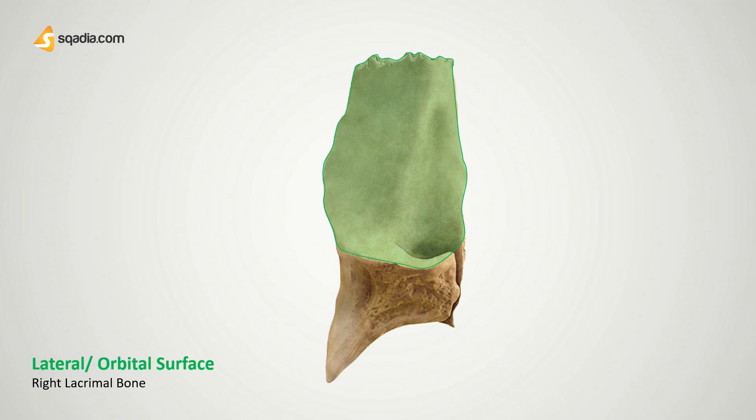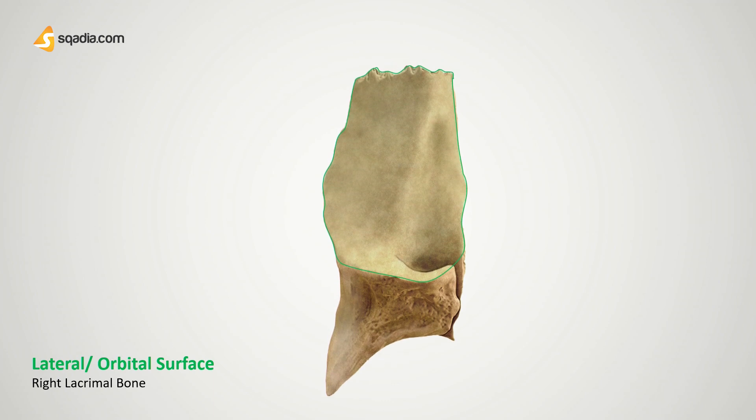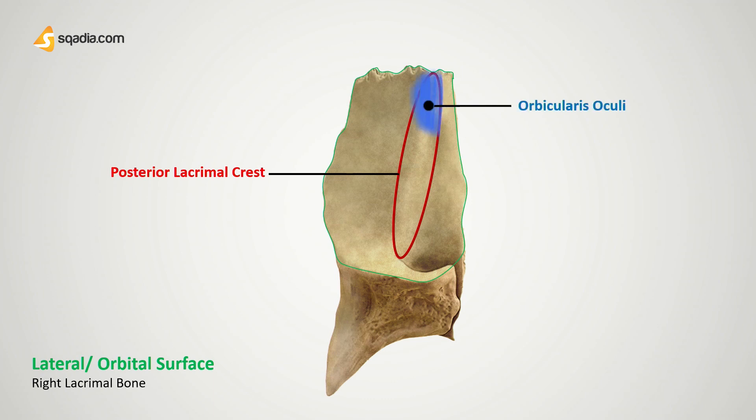Let's take a closer look at the two surfaces. First up we can see the lateral surface, which we also call the orbital surface because it faces towards the contents of the orbit. When we see this lacrimal bone we can notice a vertical ridge called the posterior lacrimal crest — this is a defining feature of this surface. It is very important to note that this lacrimal crest gives origin to the lacrimal part of the orbicularis oculi, although some sources claim this part is not well defined, so the main origin is usually attributed to the frontal process of the maxilla.